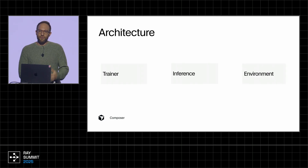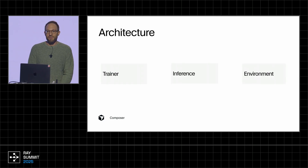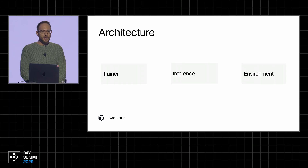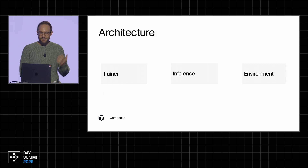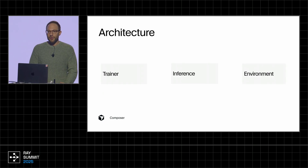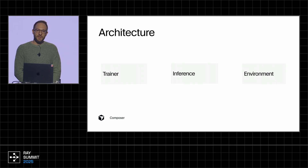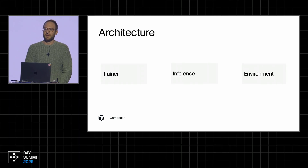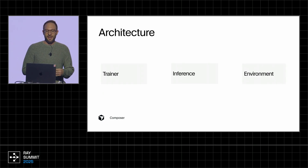At a high level, we have three different servers: a trainer, an inference server, and an environment server. The trainer mainly uses PyTorch and looks like a standard machine learning stack scaled to a very large degree. The inference server primarily uses Ray and orchestrates the rollouts. The environment server uses micro VMs to spin up stateful versions of these environments, allowing us to make file changes, run terminal commands, and run linters. You can think about this as running a mini version of Cursor.